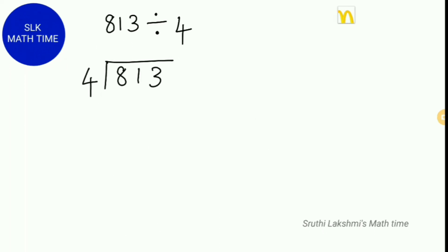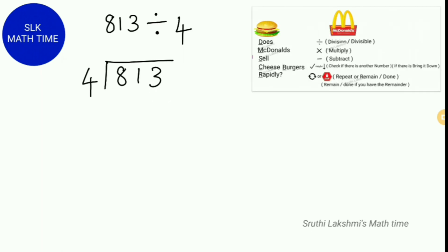Let's see another example: 813 divided by 4. Here 4 is the divisor and 813 is the dividend. How many 4s can fit in 8? We write a 2. Next, we multiply 4 times 2, which gives us 8. Then we subtract 8 minus 8 and we get 0.